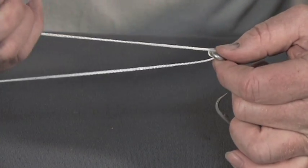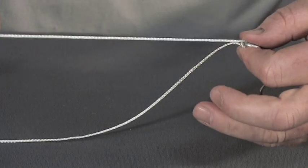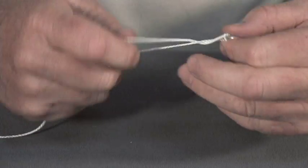That increases the strength of the knot where it comes around the eye of the hook, and then you will wrap the tag end of the line around the main line five or six times.